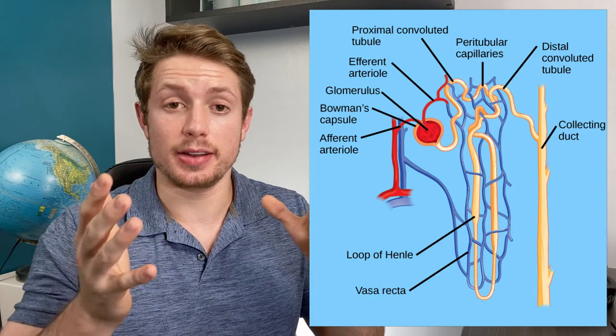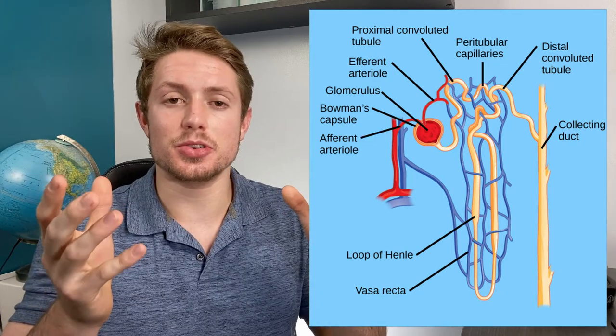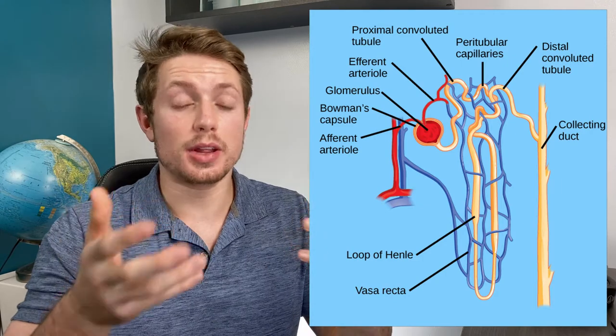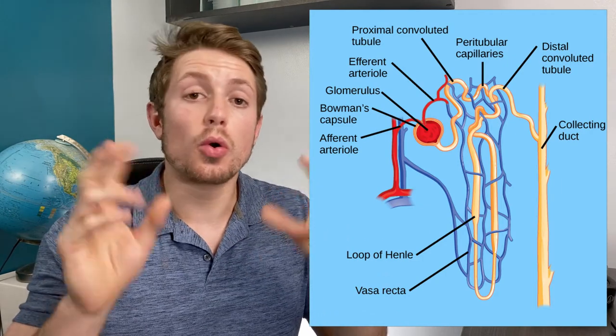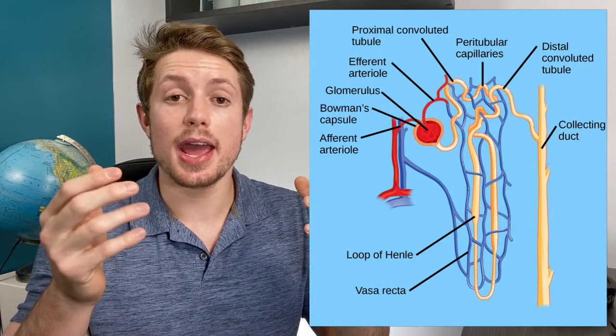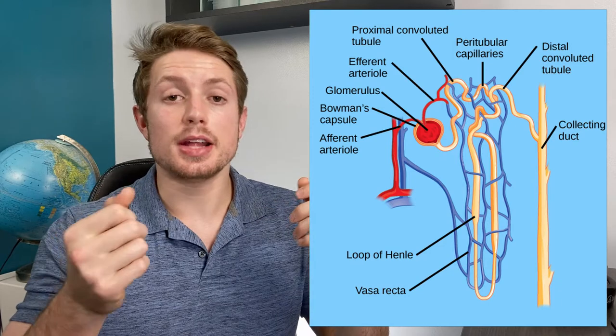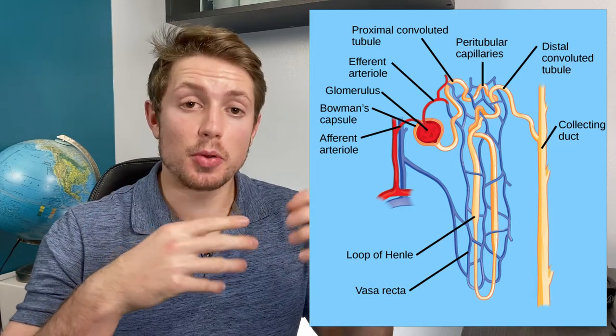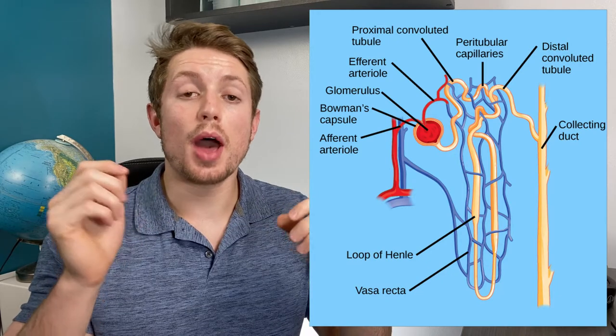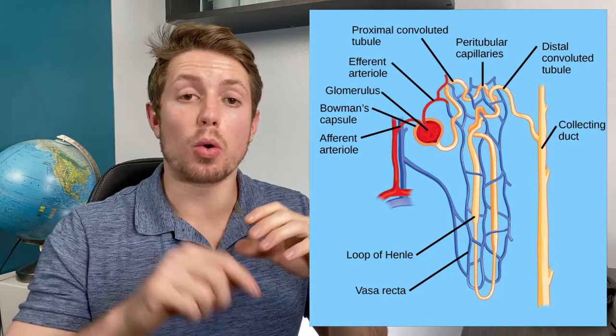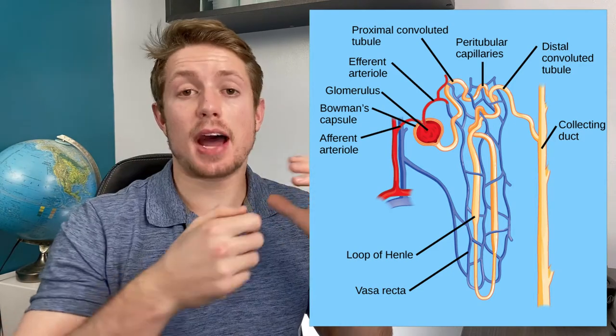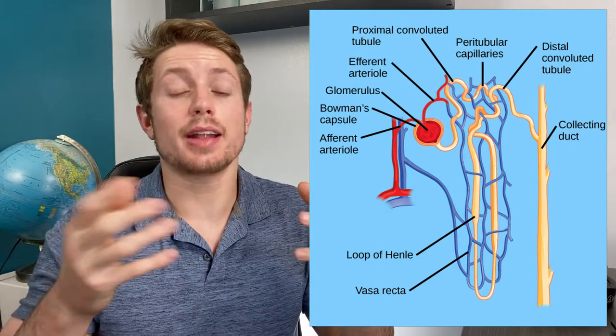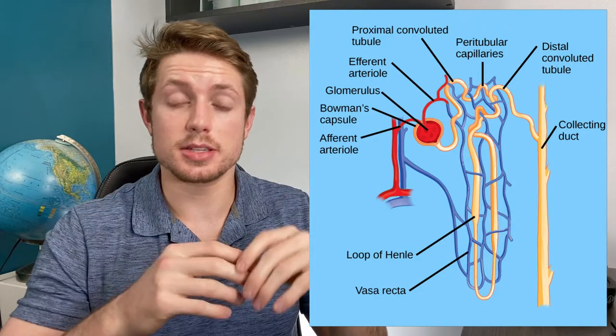Then we get to something called the loop of Henle, which is an awesome solution to the problem of we need to be able to either have really concentrated urine when we're trying to hold onto water or really dilute urine if we're trying to get rid of water quickly. So what the goal of this loop of Henle is, is to create a concentration gradient within the kidney. And so when it is going down, it's called the thin descending limb of the loop. What this part of the limb is, is it is permeable to water, but not permeable to any salt or ions. And so as it goes down the loop of Henle, more and more water is sucked out of the loop. So once the urine gets down to the bottom of this loop of Henle, it's going to be on the order of over a thousand milliosmolar. And it's starting at like 290 is what plasma and blood normally is. So it's super concentrated.